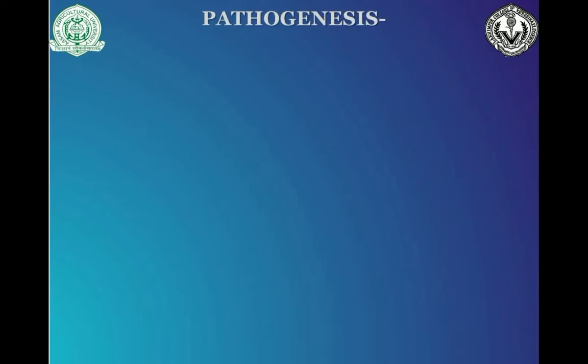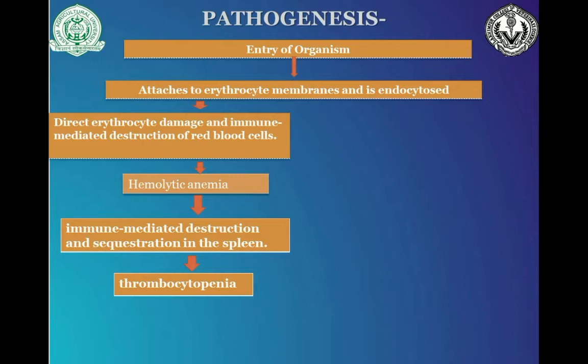Coming to the pathogenesis: after entry of the organism, it attaches to the erythrocyte membranes, which are then endocytosed. There is direct erythrocyte damage, which can be through immune-mediated destruction or other mechanisms. Destruction of red blood cells leads to hemolytic anemia and sequestration in the spleen. Due to hemolytic anemia, the spleen has an increased workload, resulting in splenomegaly. As a result of splenomegaly, the spleen is unable to perform its normal functioning.